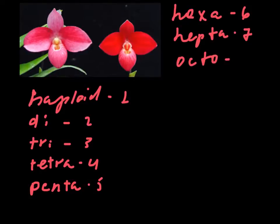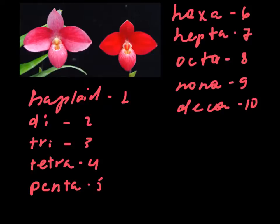And nona nine and deca ten. I'm not sure about nonaploid and decaploid plants, but I know that octoploid plants exist, for example such plants like strawberry.